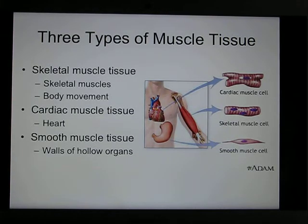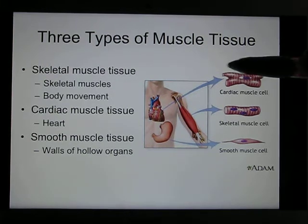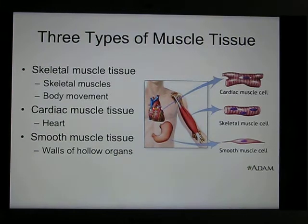We have three different kinds of muscles: skeletal muscle, cardiac muscle, and smooth muscle.